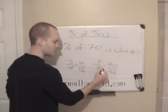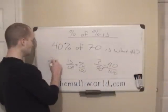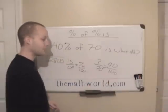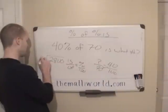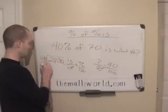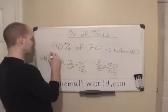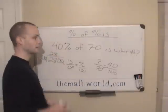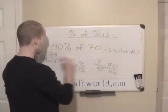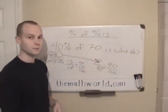So the first thing we're going to do here is we're going to multiply these numbers. 70 times 40 is 2800, and then divided by 100. And I'm just going to cancel out the zeros from here. And one goes into 28, 28 times. So 40% of 70 is 28. And 28 is going to go right here where that question mark is.